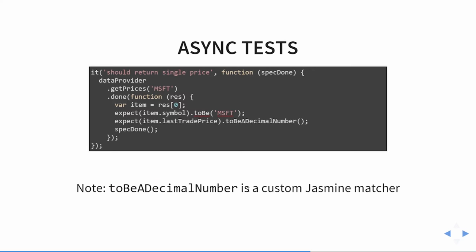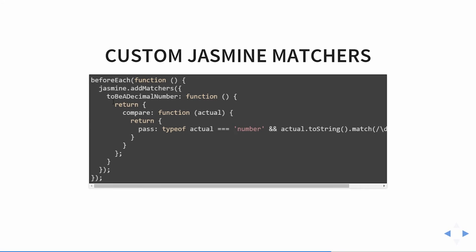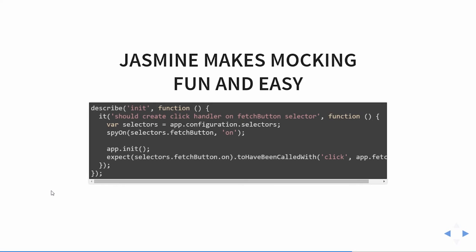'toBeADecimalNumber' here is a custom Jasmine matcher — something you won't really find in a strongly-typed language. You can compose your own language around your tests to get closer to your problem domain. If you were writing a chess game maybe it would be 'I expect to be on the corner of the board' or 'on row 2.' The code for the custom matcher is a little scary but you go to the docs, copy-paste it, and edit one line.